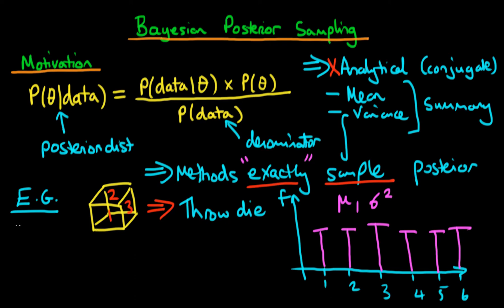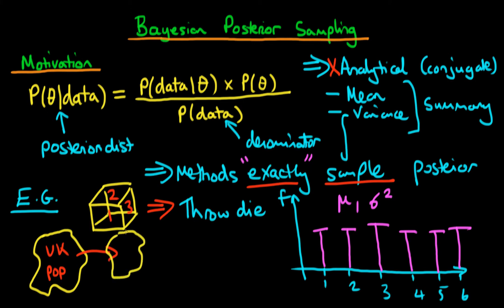The other example I want to talk about is the case of a continuous random variable. Let's imagine we have the case of the UK population, and what we're interested in finding out is what is the distribution of heights within the UK population. In general, we don't have the entirety of the UK population's height data, so what we need to do is take some sort of random sample.